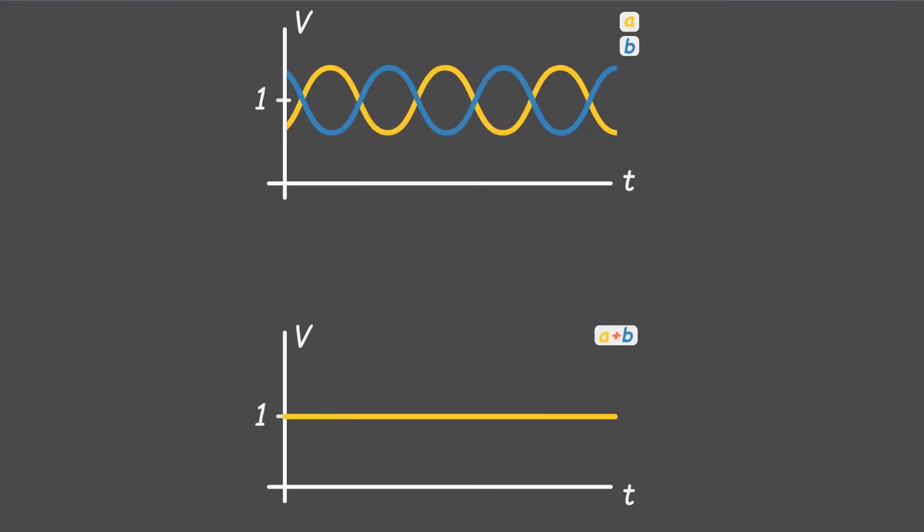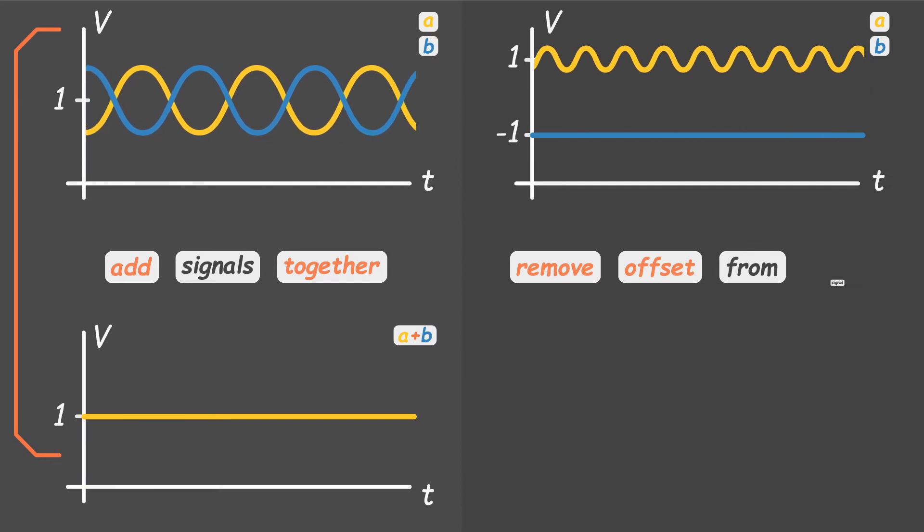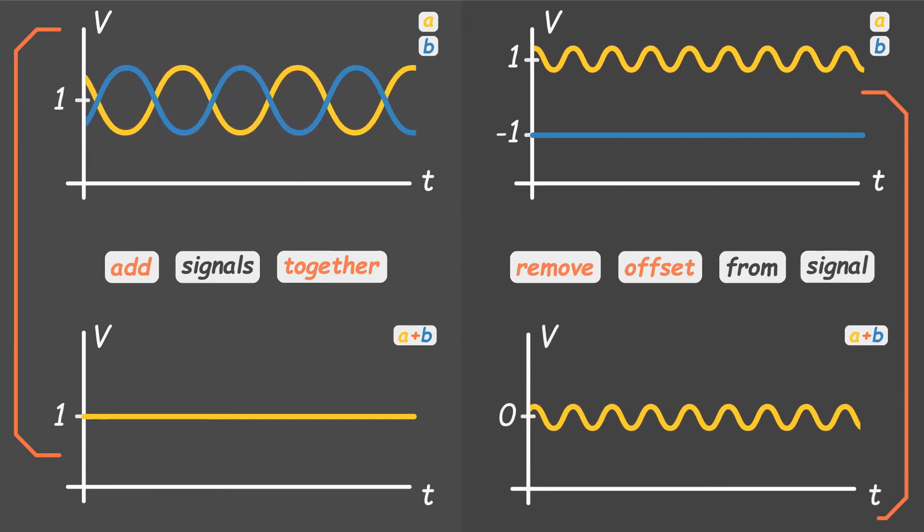In electronics, we need to add different voltage signals together, or remove an offset from a signal, which means that a defined value is subtracted from the signal.